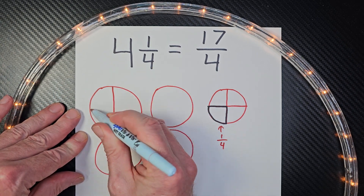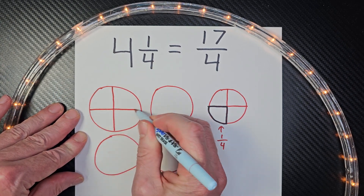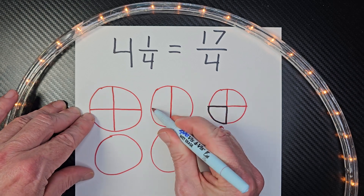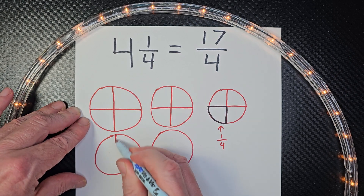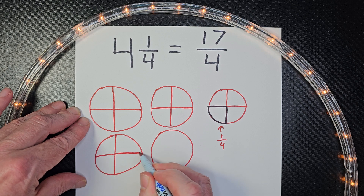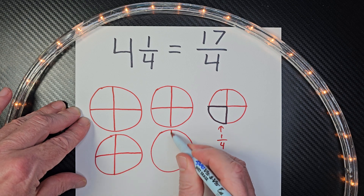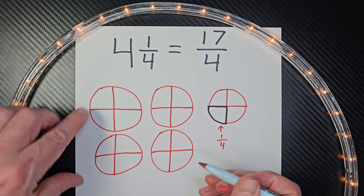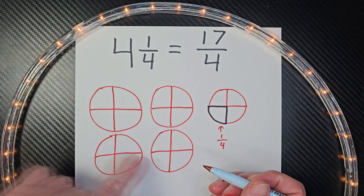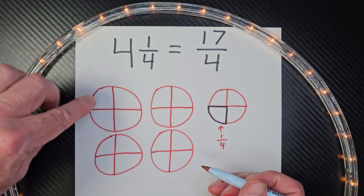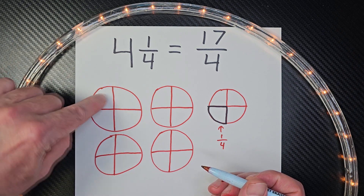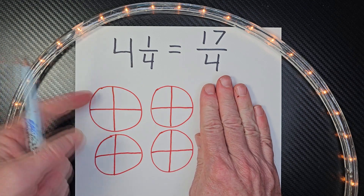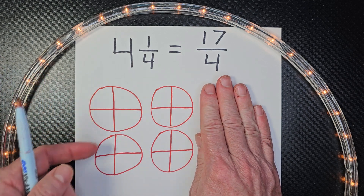So I have four slices right here, four slices right there, another four slices here, and another four slices here. I did not take away from any of these — it's still four apple pies. I just cut them in four pieces.